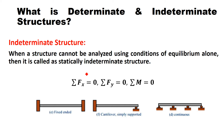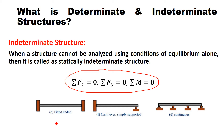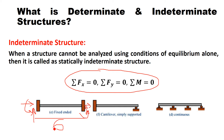Opposite to that, there is a definition of indeterminate structures. When the reactions of supports cannot be analyzed using conditions of equilibrium, then it is called as statically indeterminate structures. The same conditions of equilibrium are applicable, but if you look at a fixed beam where both ends are fixed, there are three reactions at the left support and three reactions at the right support. Total number of unknown reactions in this fixed beam are six, whereas equations of equilibrium are only three. It means this is a statically indeterminate beam — we cannot find out six unknowns using three equations.